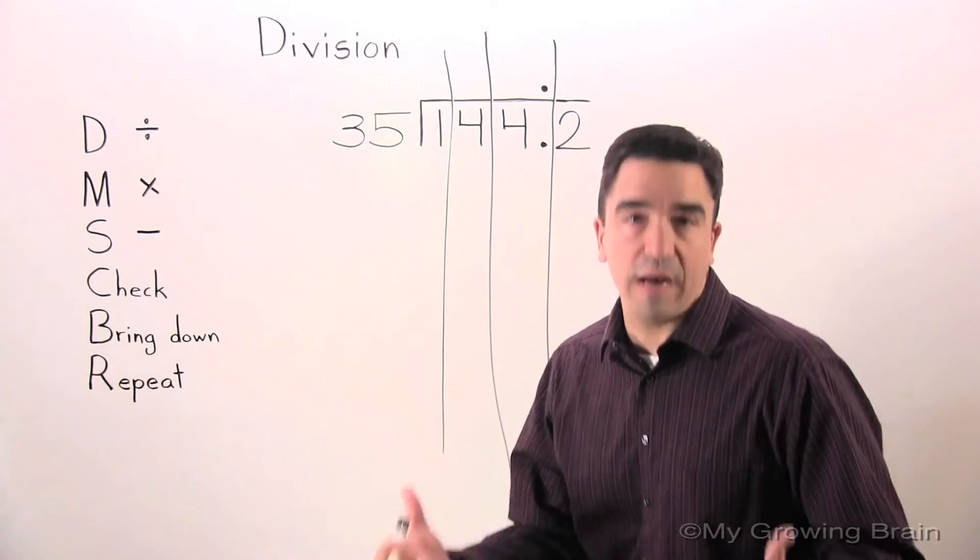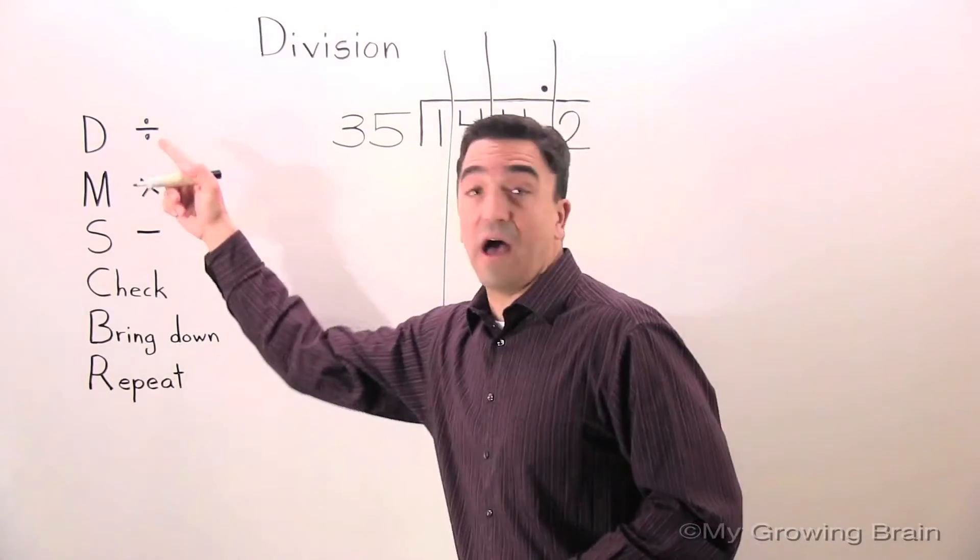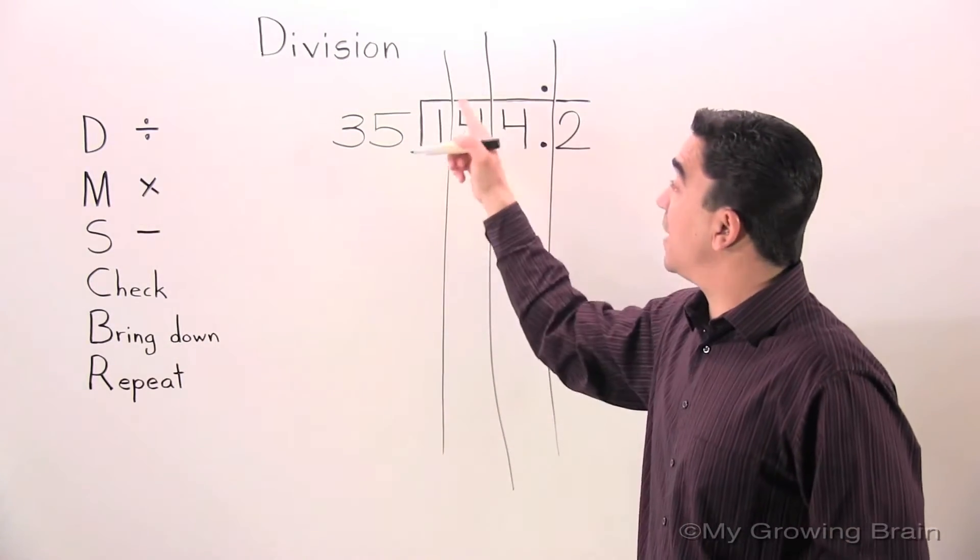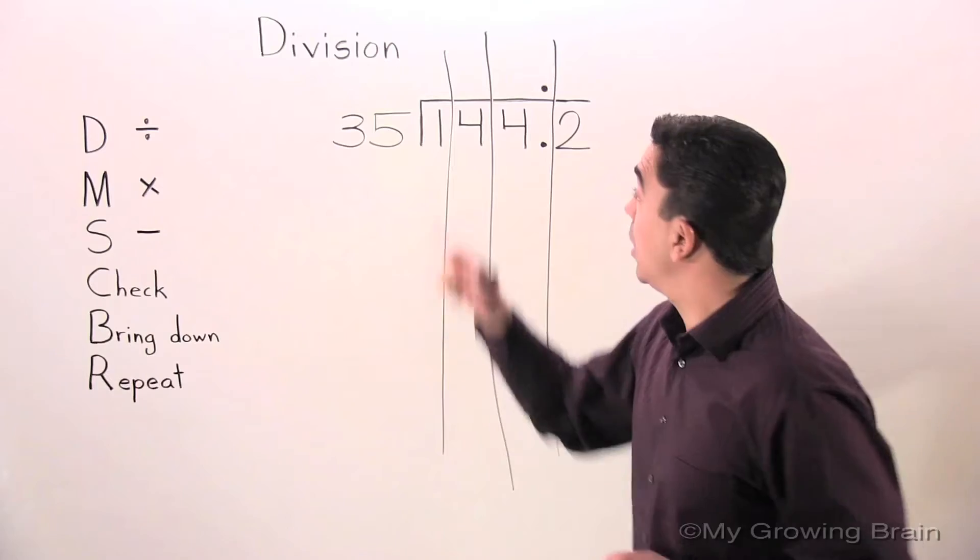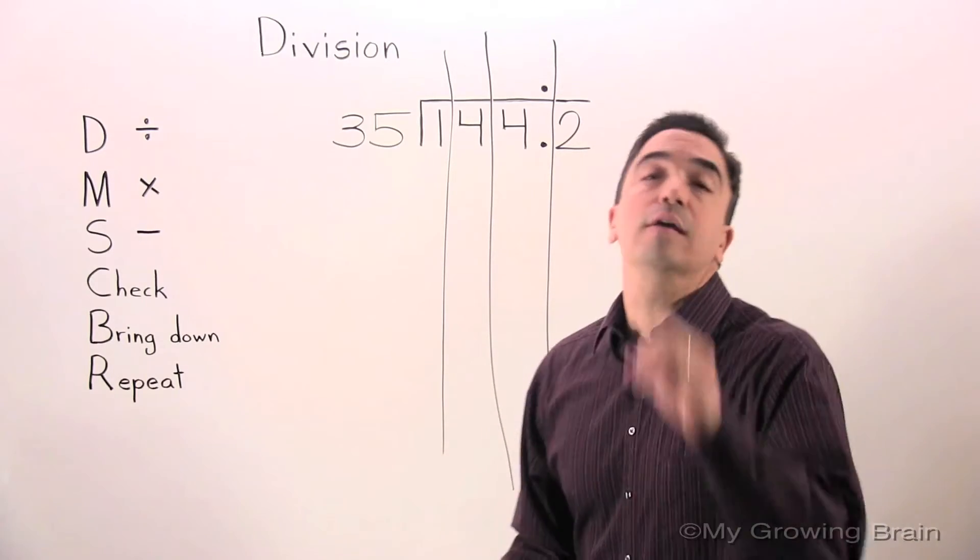Now we're ready to begin. Let's start with the first step: divide. 1 divided by 35, or 35 into 1. Can't do it. Use a 0.